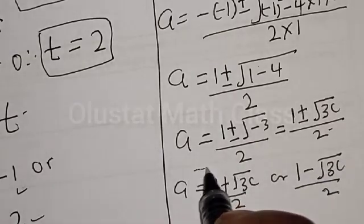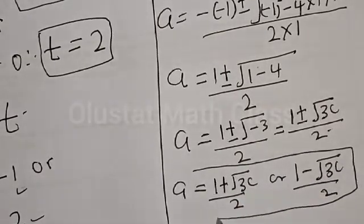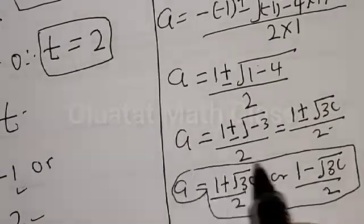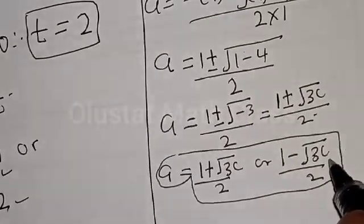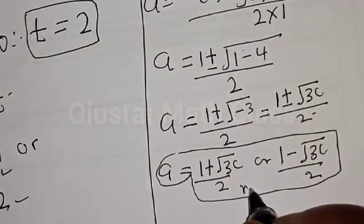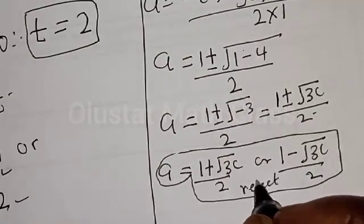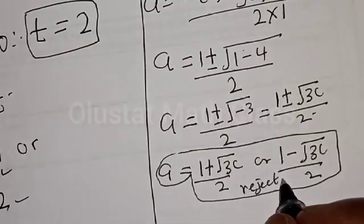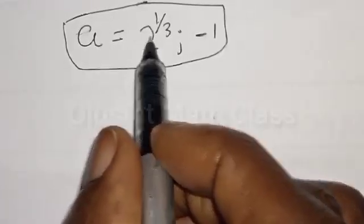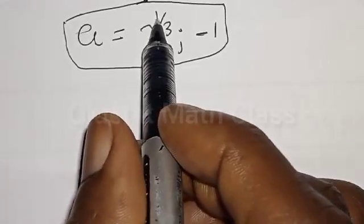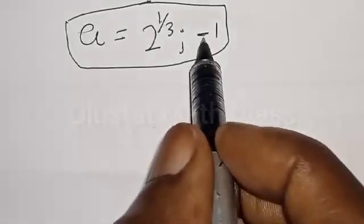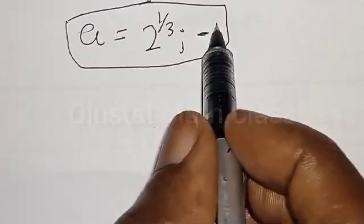We cannot make use of this because this is a complex solution. So we don't need this — we reject this. Our final answer is A is equal to 2 raised to power 1 over 3, and A equals minus 1.